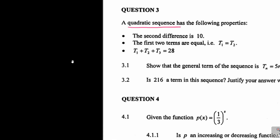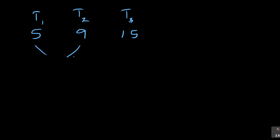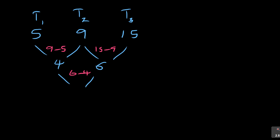Now it's a quadratic sequence, meaning it has a second difference. Let me take a simple example: say I've got 5, 9, and 15 as t1, t2, t3. If I find the first differences: 9 minus 5 is 4, and 15 minus 9 is 6. Then the second difference is 6 minus 4, which is 2. That's how a quadratic sequence works, and similarly we can apply this to our problem.